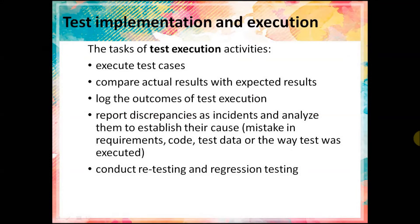The tasks of test execution activities are: execute test cases, compare actual results with expected results, log the outcomes of test execution, report discrepancies as incidents, and analyze them to establish their cause — it can be a mistake in requirements, code, test data, or the way the test was executed. Also, conduct retesting and regression testing.